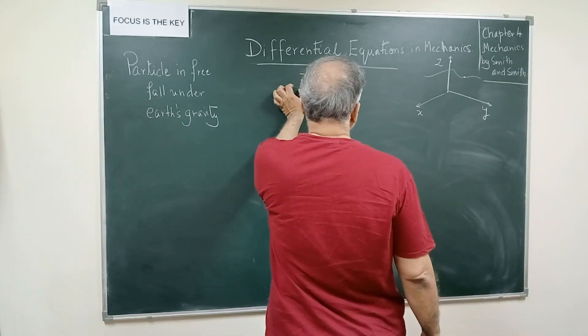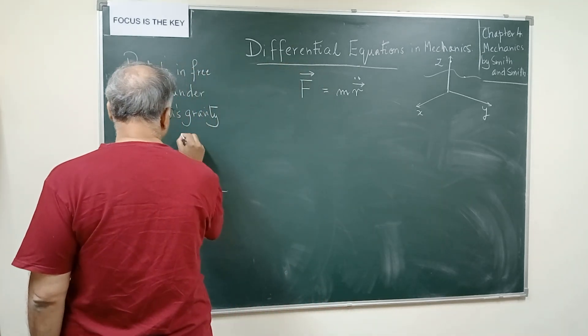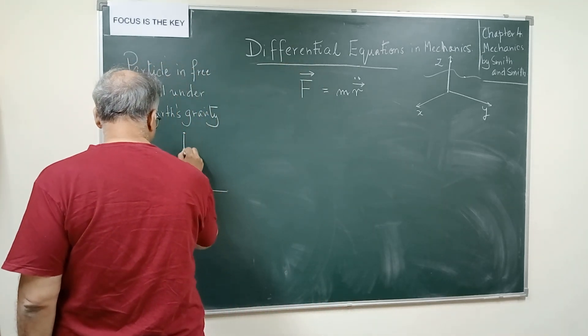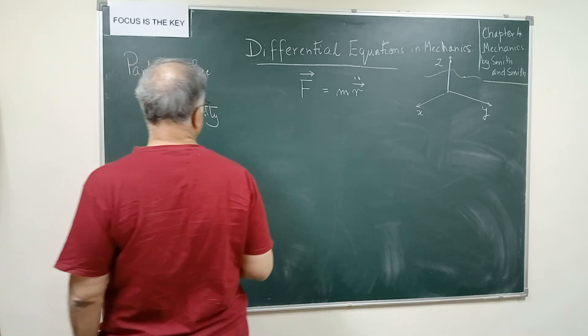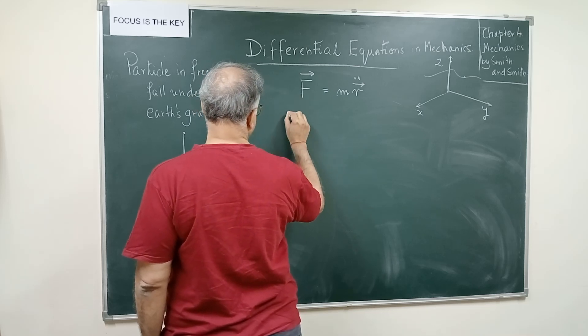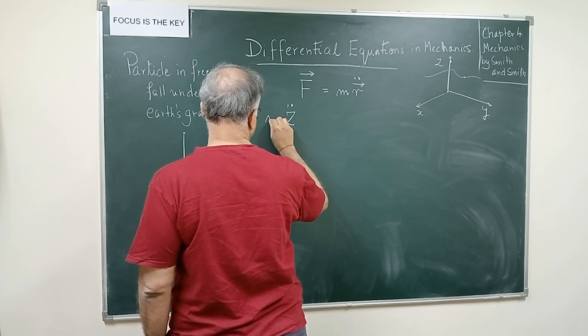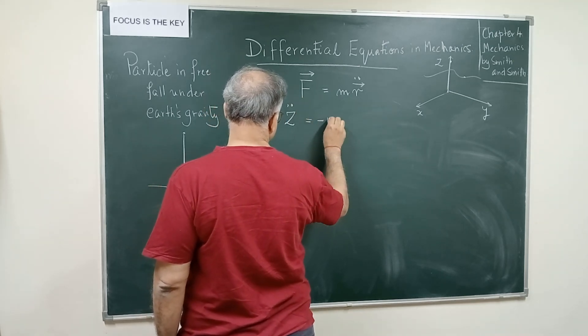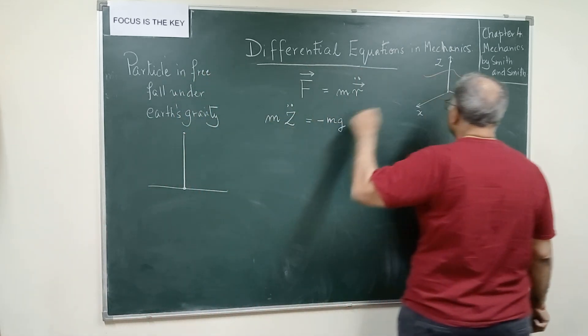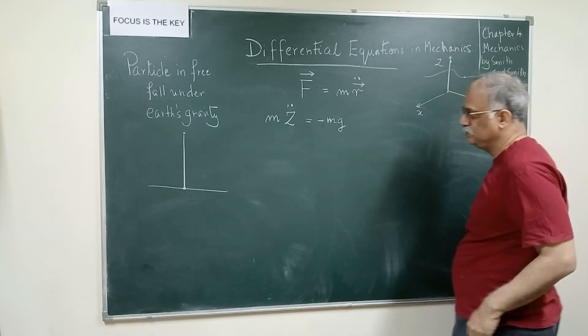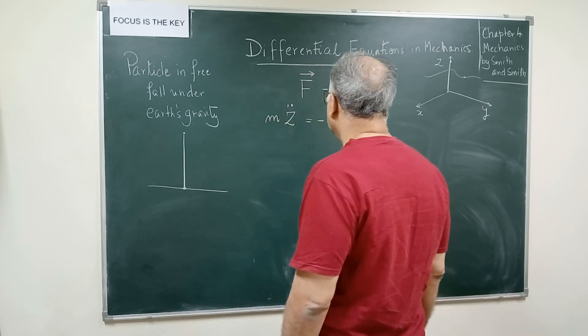So basically if you are just dropping a stone from here and it comes and hits here with certain velocity, the differential equation is m into z** is minus mg because the direction of the gravitational force is opposite to the positive direction of z. So this has to be maintained when you do mechanics right.